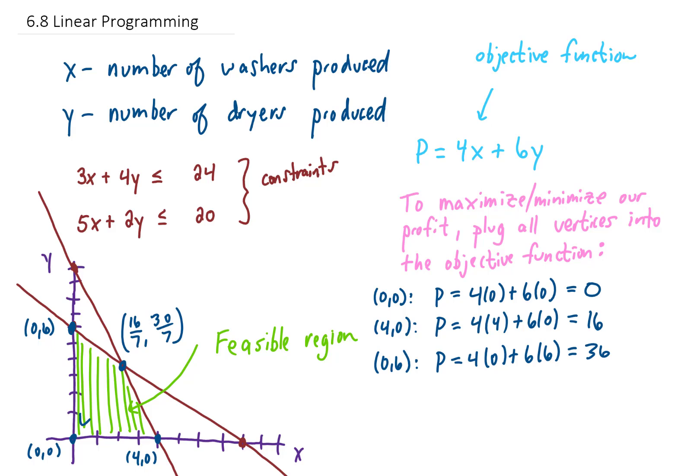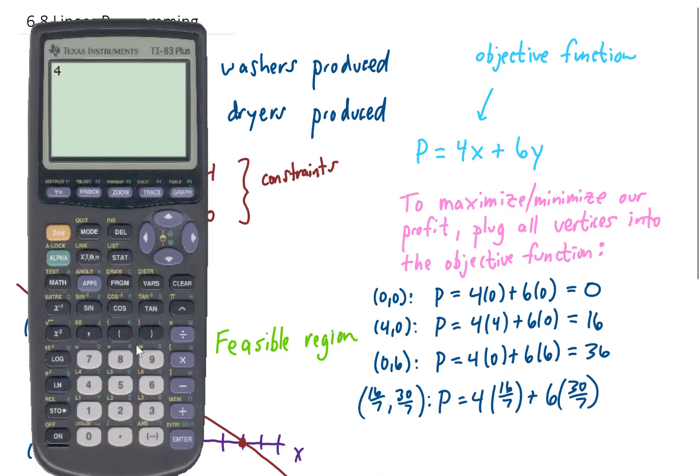And our last vertex is the one with the fractions. Plugging our x and y values into the profit function gives us this. And to do that calculation, I'm going to bring up a calculator. And my calculator is giving us a profit of $34.86.